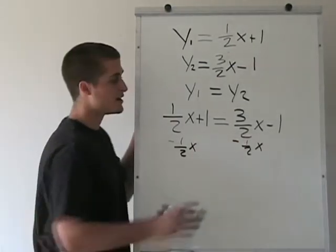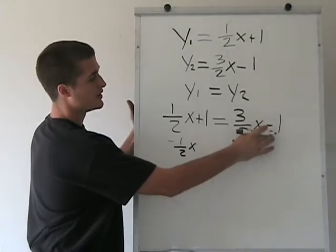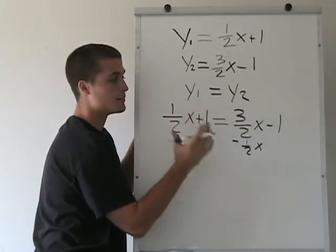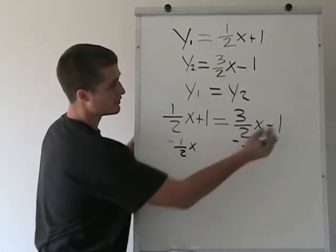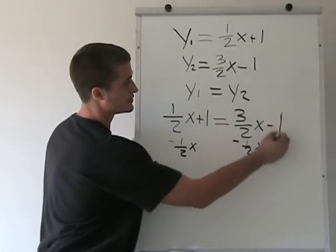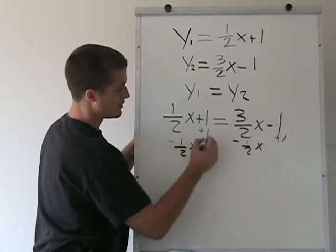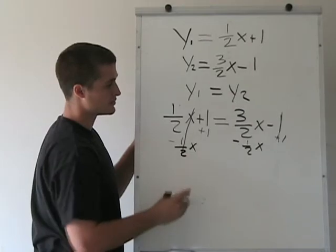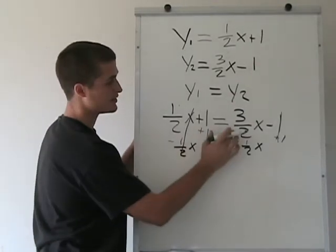And at the same time, we're going to take this 1 and add it to this side so that we just have x's on this side and then a number on this side. So if we add 1, it cancels this out. And these two half x's cancel out. So we have numbers on this side and x values on this side.